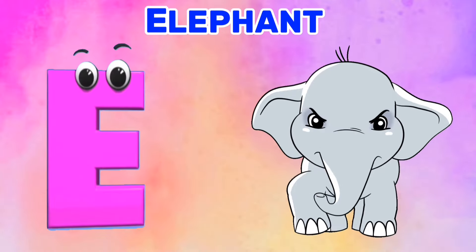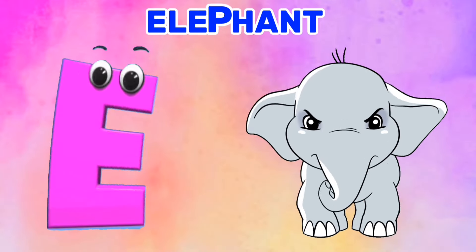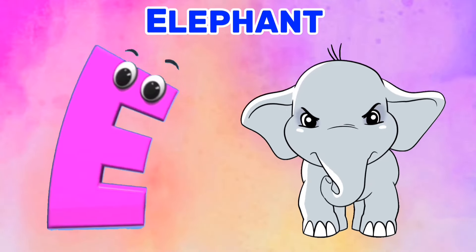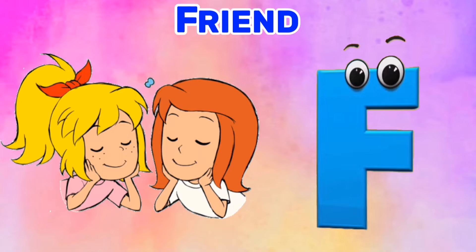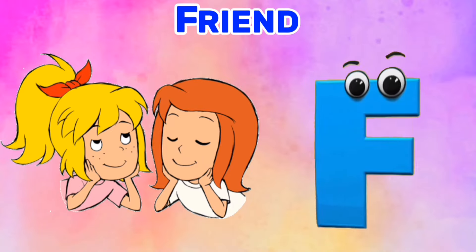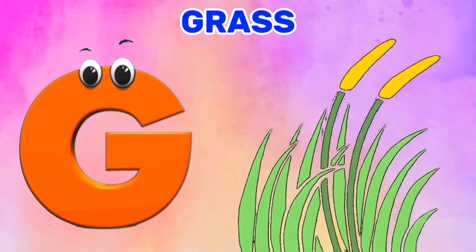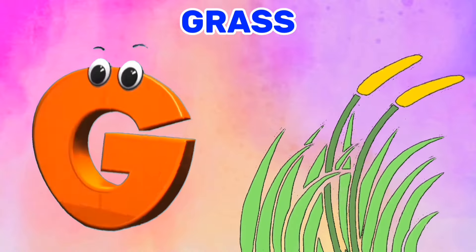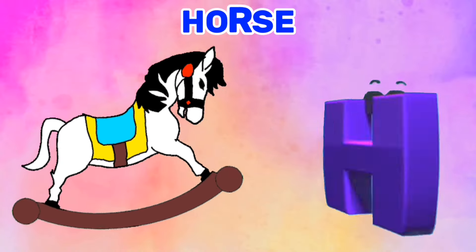E is for Elephant. Elephant. F is for Friend. F. F. Friend. G is for Grass. G. G. Grass.